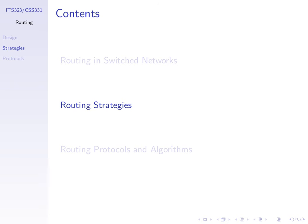Today we're going to go through three routing strategies - general approaches for routing. The first and third are almost the same. The first is called fixed routing, and the third is called adaptive or dynamic routing. They're pretty much the same, so we'll explain the difference. The middle strategy - strategy two - is flooding, which is completely different from the others, so we'll spend more time on that.